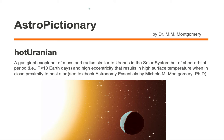Let's take a look at the orbit of a hot Uranian, which I will label with H and U — H for hot, U for Uranian.